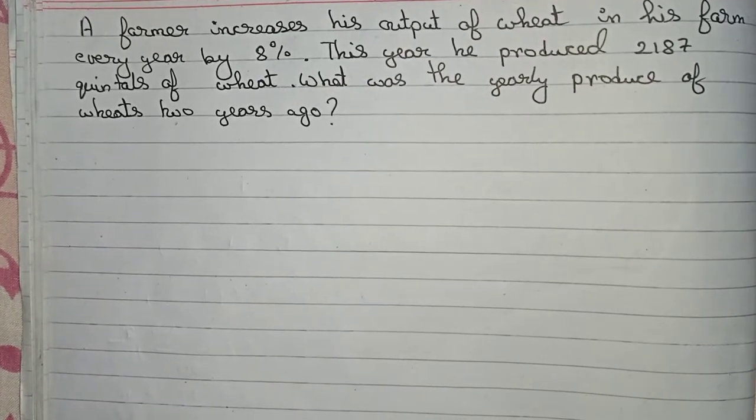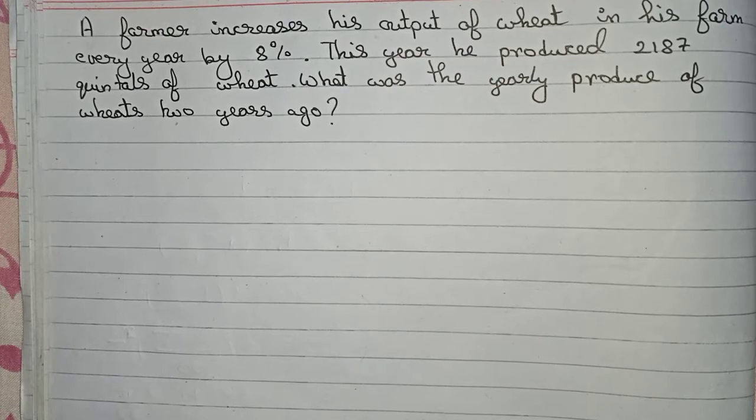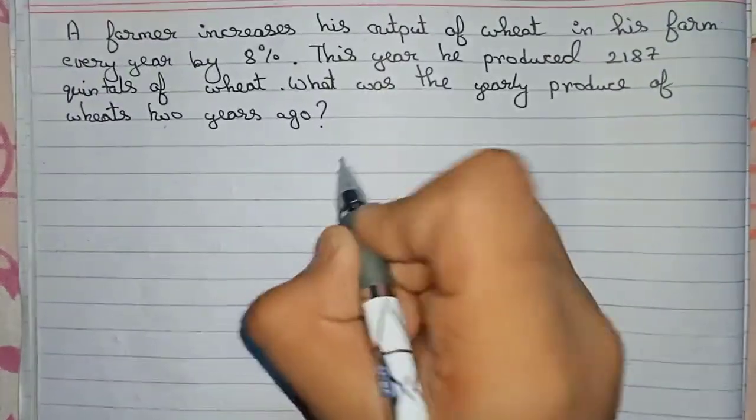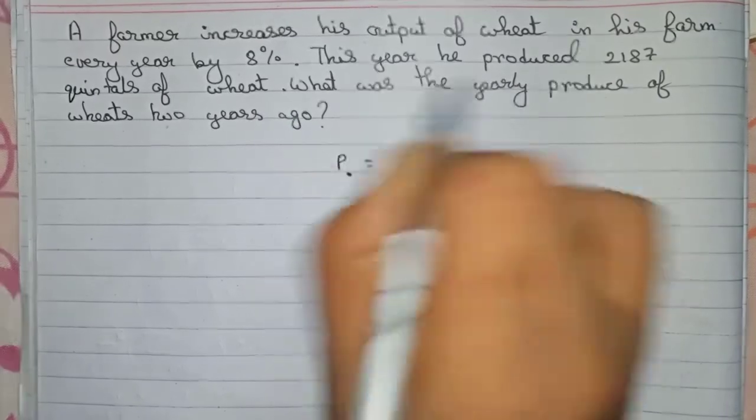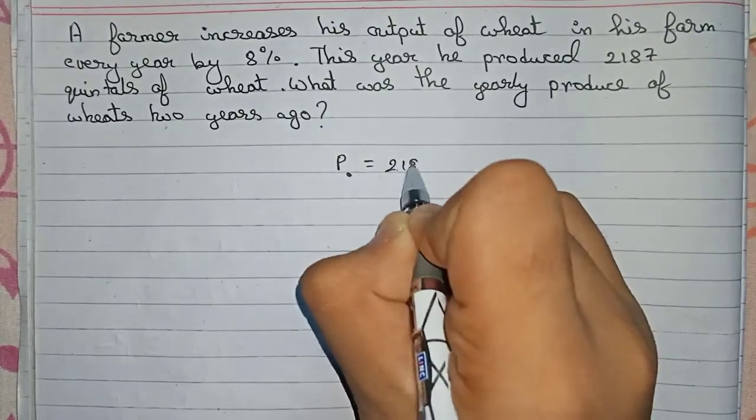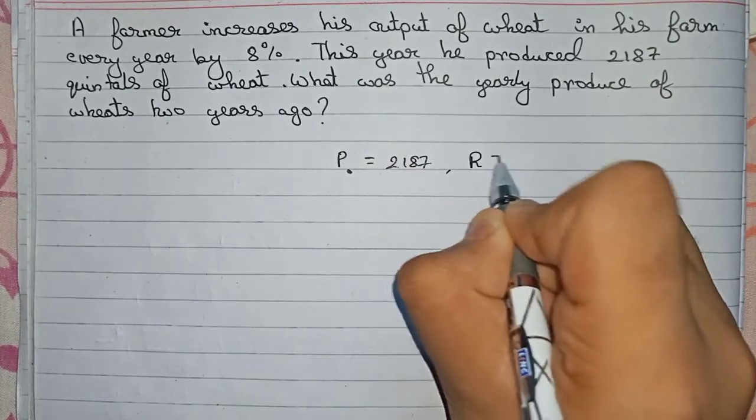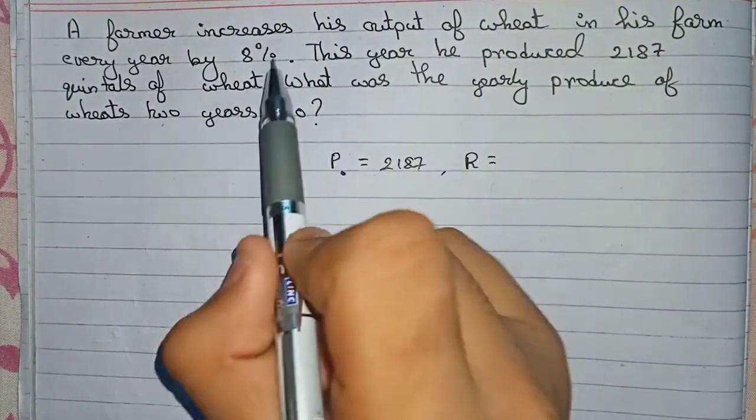So write all the information that we've been given. Principal P₀ is given: 2187 quintals. So we're not writing quintals anymore. Rate of interest, or the rate of increase, is given: 8 percent.